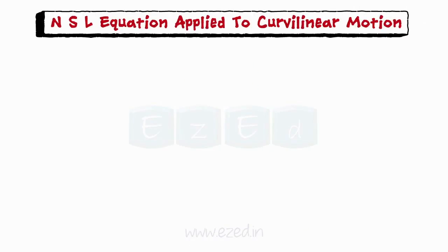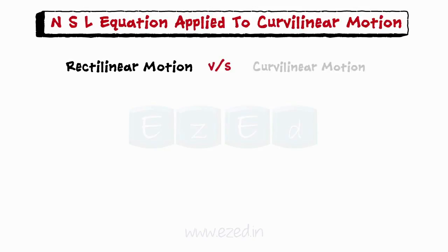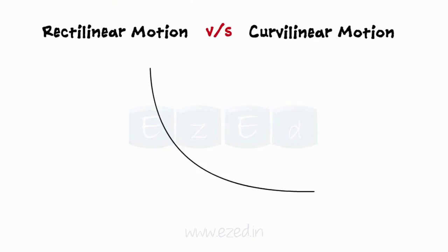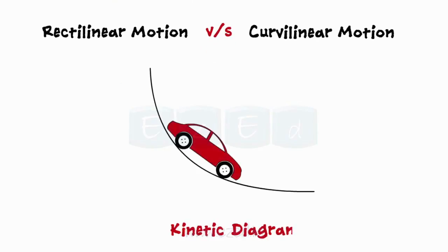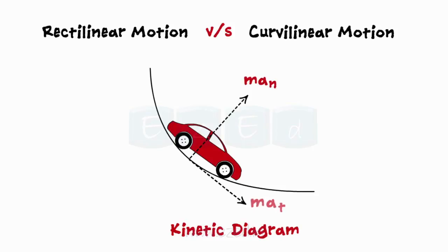The only difference between applying Newton's second law to rectilinear motion and curvilinear motion is the change in the kinetic diagram. In curvilinear motion, the M-a vector is split into two components: normal acceleration acting towards the radius of curvature, and tangential acceleration acting tangent to the path.